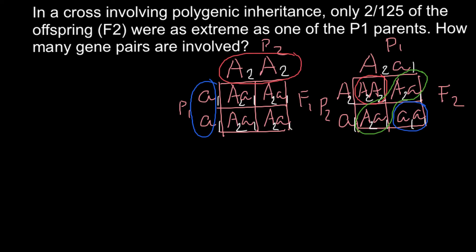Now we can return to our problem to find how many genes and allelic pairs control that trait. Here is our formula: the frequency of the extreme phenotype equals (1/2) raised to n, then squared — that is, (1/2)^(2n). For the frequency of the extreme phenotype we have 2 out of 125, so the frequency equals 2 divided by 125.